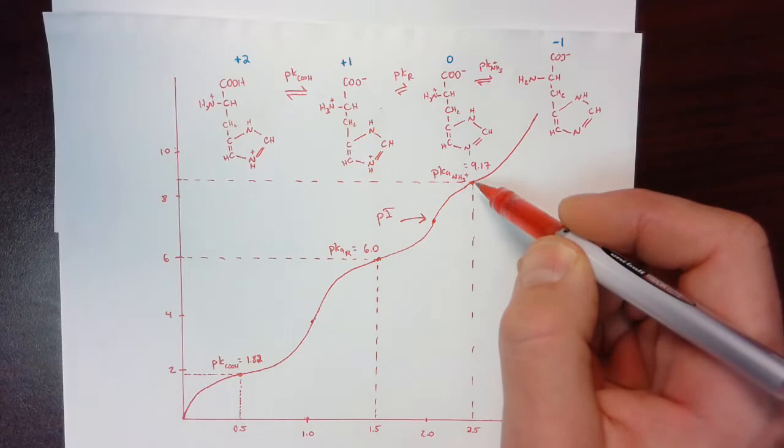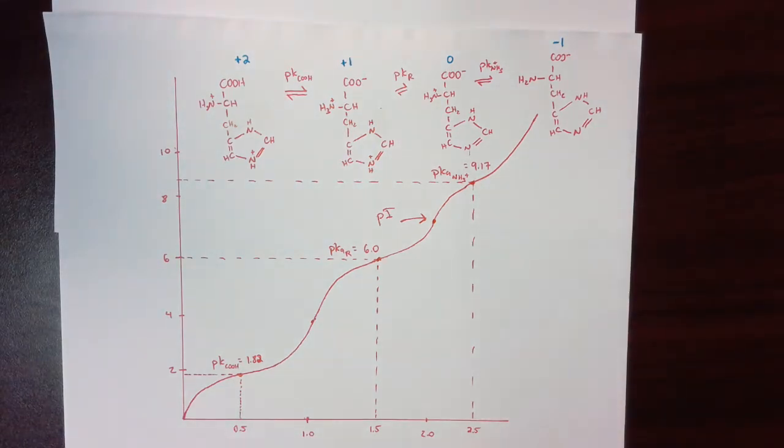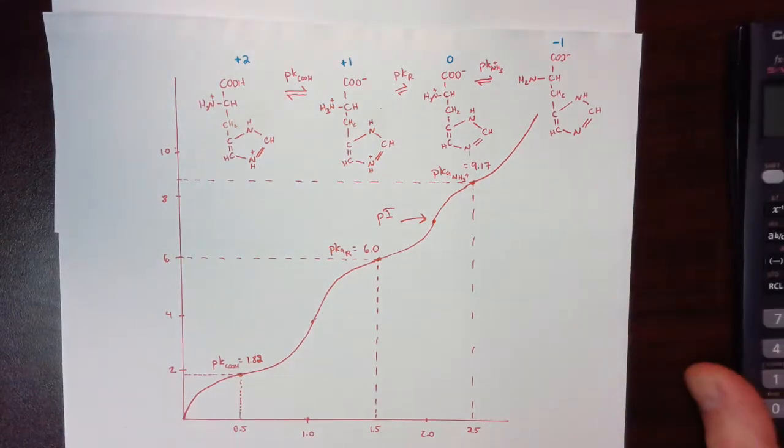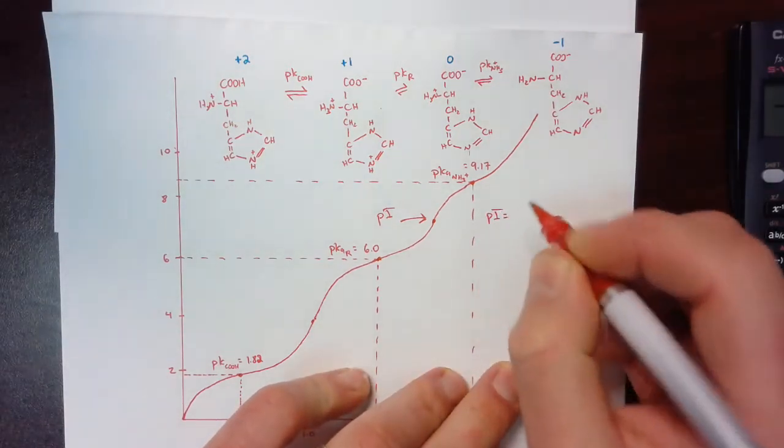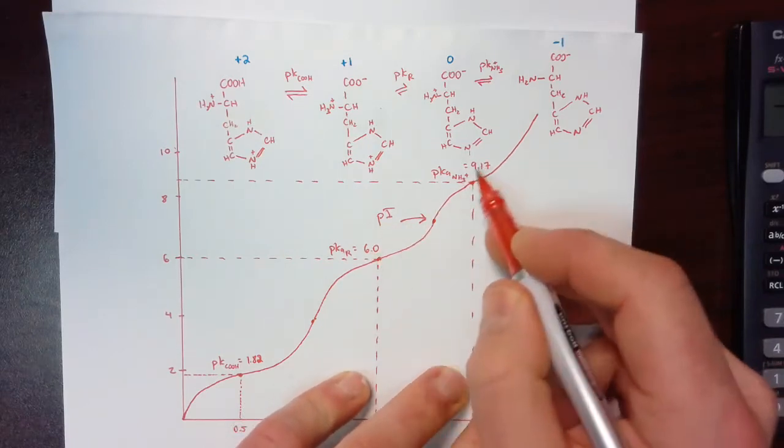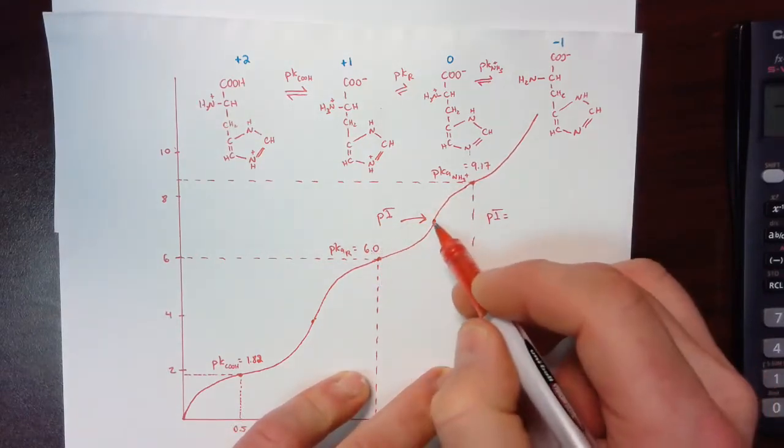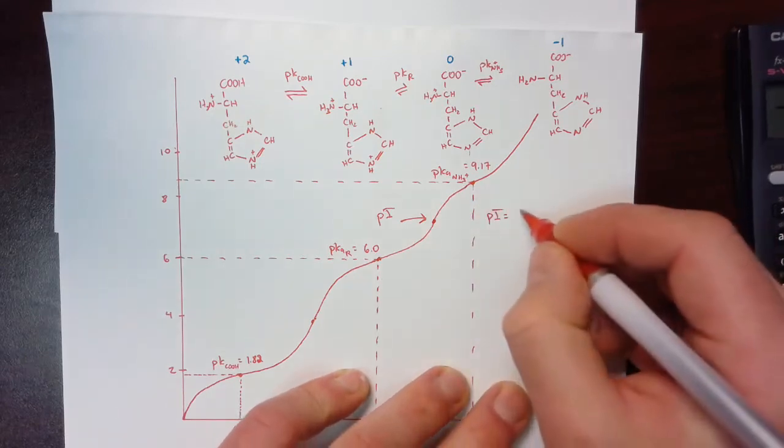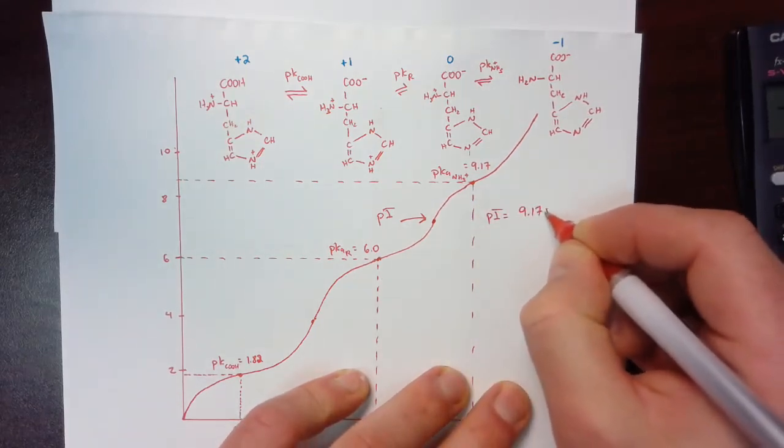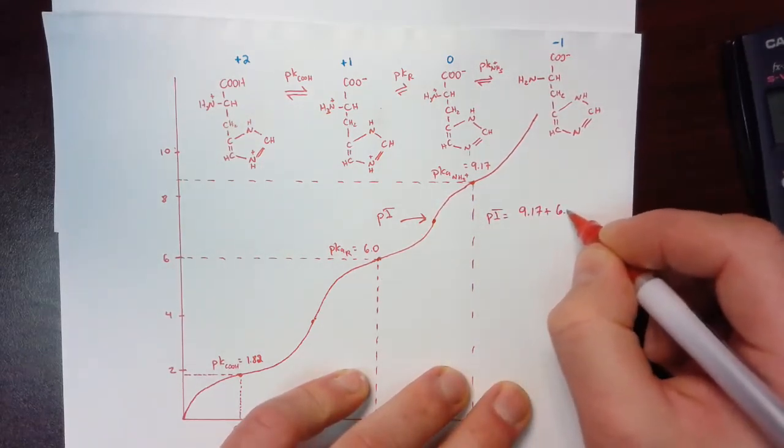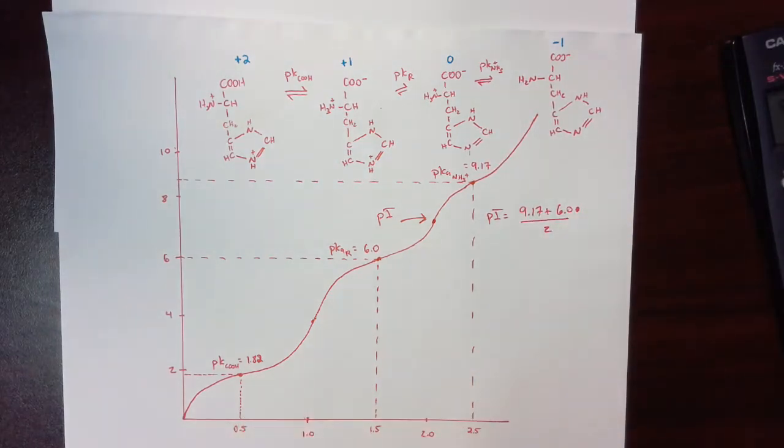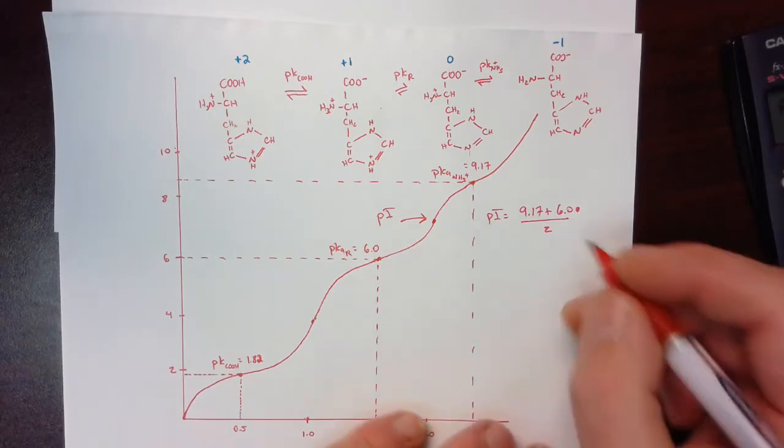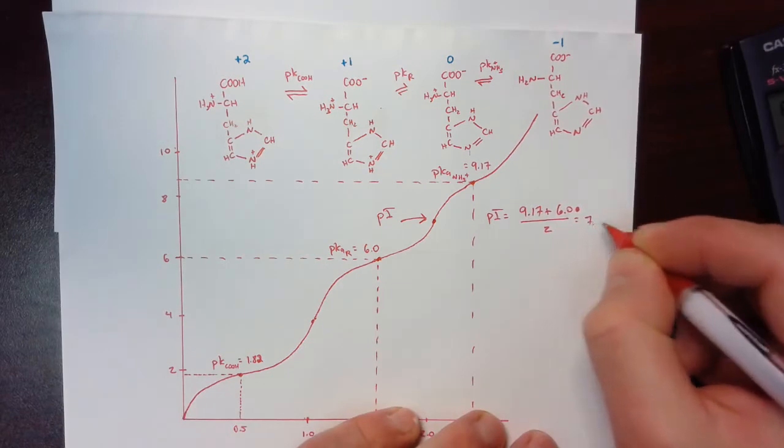And it's going to fall in between the PKR and the pKa for NH3. And we can actually calculate what this pI will be for histidine. And the way that we would do that is take the average of these two pKa's. Because essentially this is going to fall right in between the two pKa's. So we can take the average, 9.17 plus 6.0 and divide by 2. And when we do that, we get a value of 7.58.